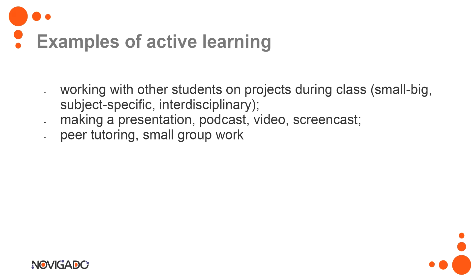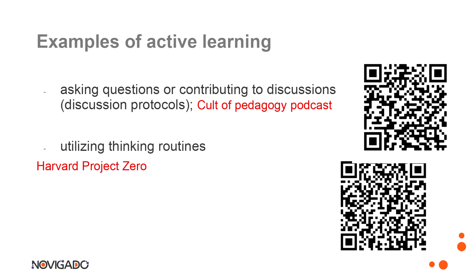I want to include two of my favorite methods for active learning. The first one is discussion — there is a very good post hidden under the first QR code. It is a post by Help of Pedagogy, which is a podcast, and Jennifer, who hosts the podcast, lists 17 different discussion protocols you can use in the classroom to make it more active. The second example is utilizing thinking routines — Harvard Project Zero, which is one of my absolute favorites, has created a whole list of different thinking routines aimed at different things.